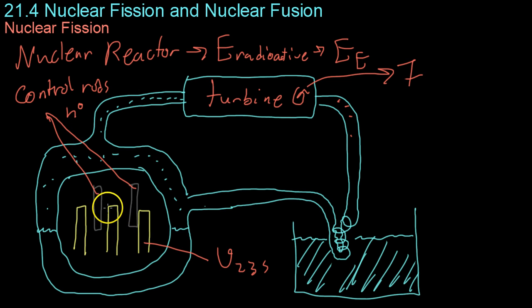Now if you don't have control rods and you have a critical mass of U-235, you can make a nuclear bomb, which basically just uses all of its fuel in a few seconds, and instead of heating water and getting controlled electricity out of it,